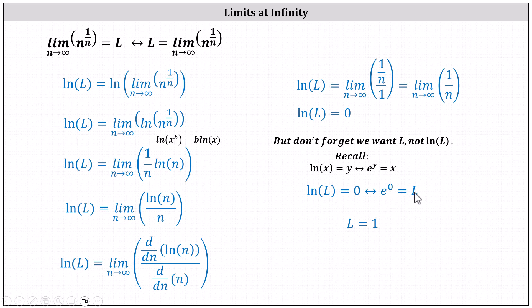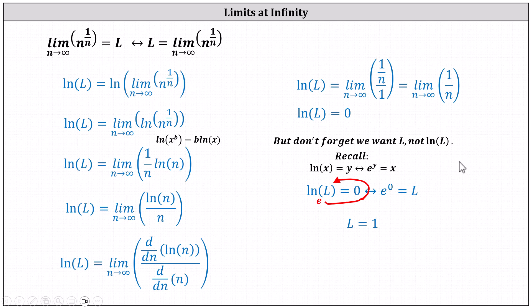Again, to form the exponential equation, natural log is base e. And working around the equal sign gives us e to the power of zero equals L. Since e to the power of zero is one, therefore L equals one, which is the value of the original limit.